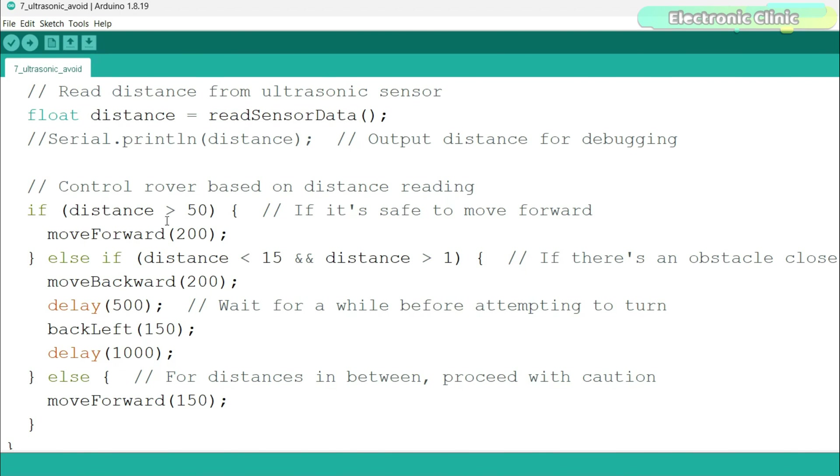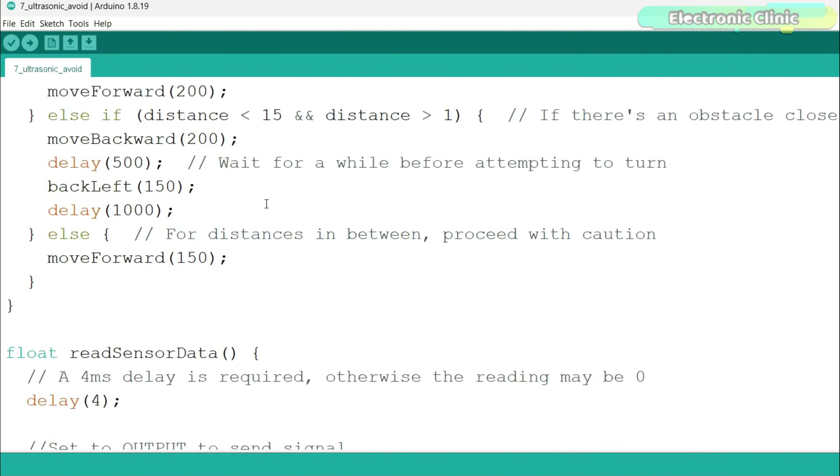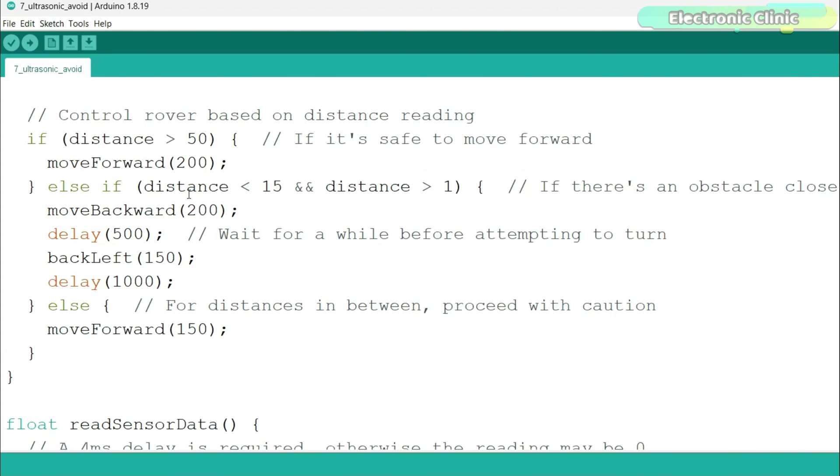Then we use some if conditions to control the Galaxy RVR rover based on the distance reading. The first condition checks if the distance is greater than 50 centimeters, then we call the move forward function. And if the distance is less than 15 and greater than 1, then move the rover backward for half a second. Next, we turn the rover by calling the turn left function.